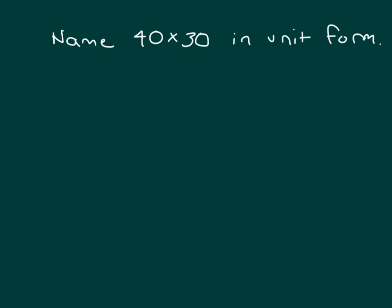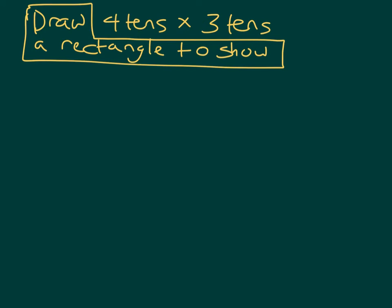Here we're first asked to name 40 times 30 in unit form. That's four tens times what? Three tens. We're going to continue with this problem of four tens times three tens, or 40 times 30. Now we're going to draw a rectangle to show four tens times three tens.